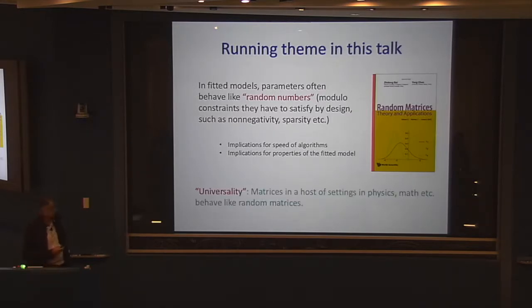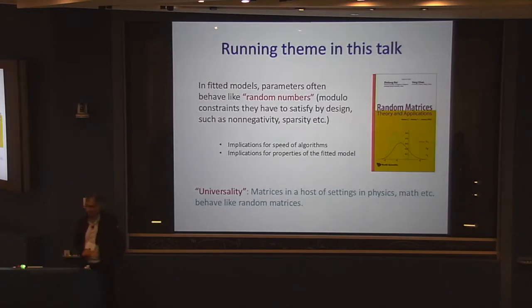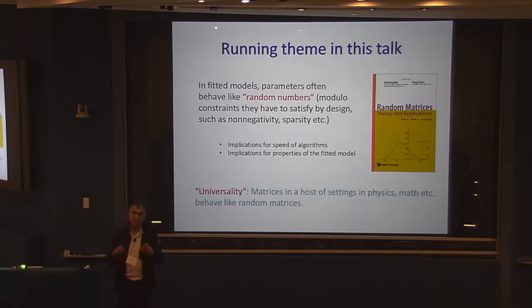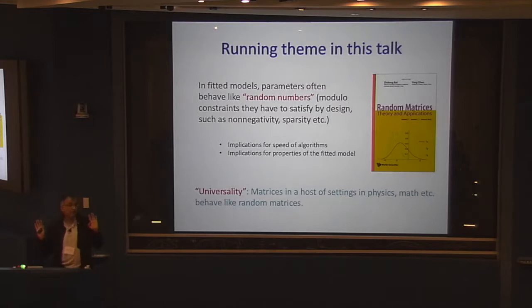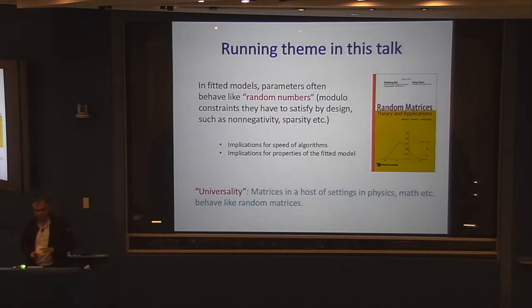Universality has implications for the speed of algorithms and also for provable algorithms — you can design provable algorithms — and implications for the properties of the fitted model. Universality refers to this phenomenon that matrices in a host of settings in physics, math, et cetera, behave like generic random matrices. I don't have an explanation for why this happens. Presumably, when you fit the model you have an optimization algorithm taking a bunch of data, and data has random-like properties, and when you aggregate by optimization, the model ends up being random. It'll probably take many decades to prove anything approaching that.